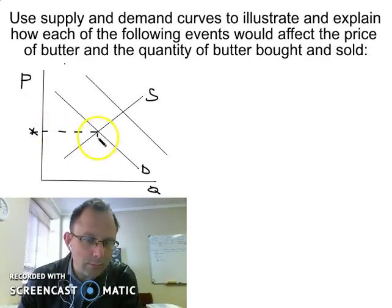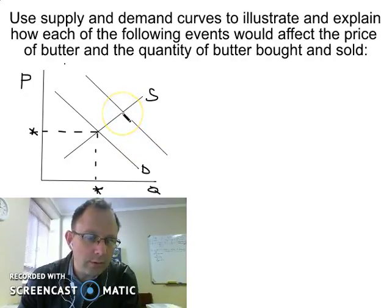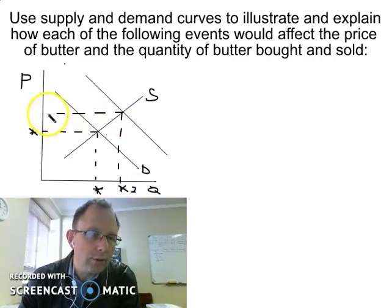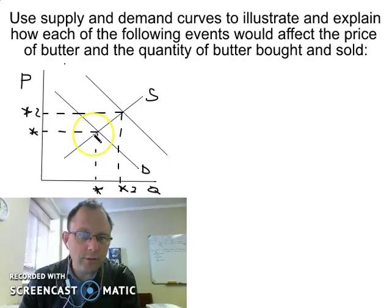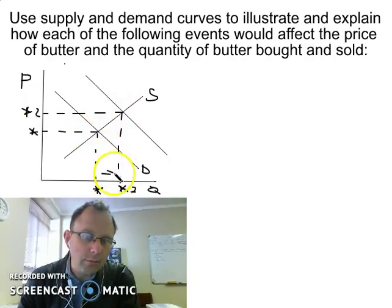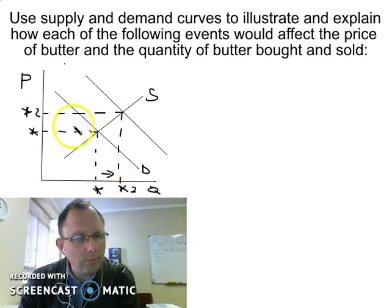Here's our demand increase. From our original equilibrium price and quantity — marked with a star — it will now increase to our new equilibrium. Nothing is happening to supply; it's just demand that increases as a result of the price change. So as a result of the increase in the price of margarine, we will now demand more butter and the price of butter will also increase.